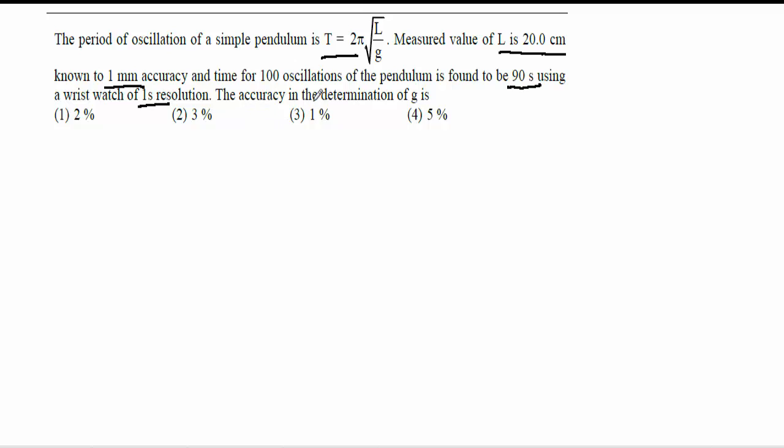So here you have to find accuracy in the determination of g. That means you have to find uncertainty or error in the value of g. Answers here are given in percentage, so that means you have to find percentage accuracy or percentage error in g.